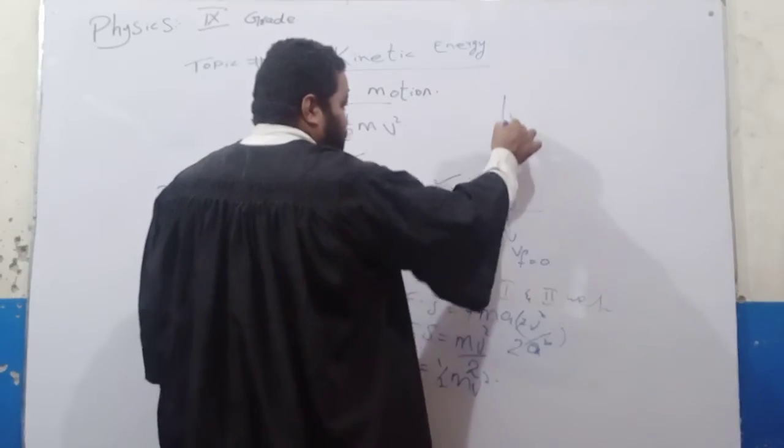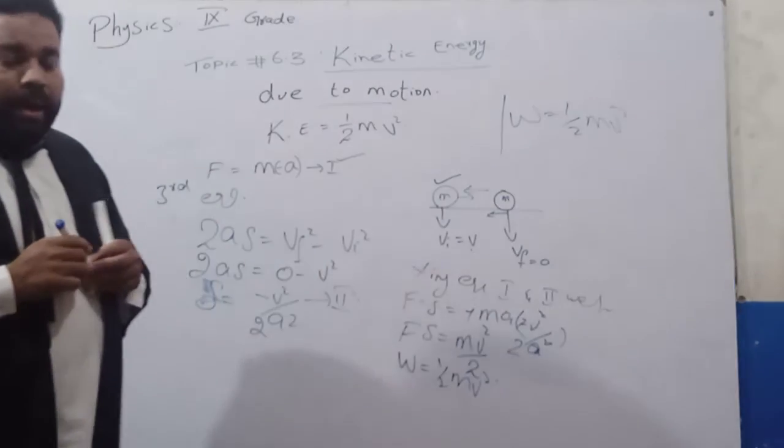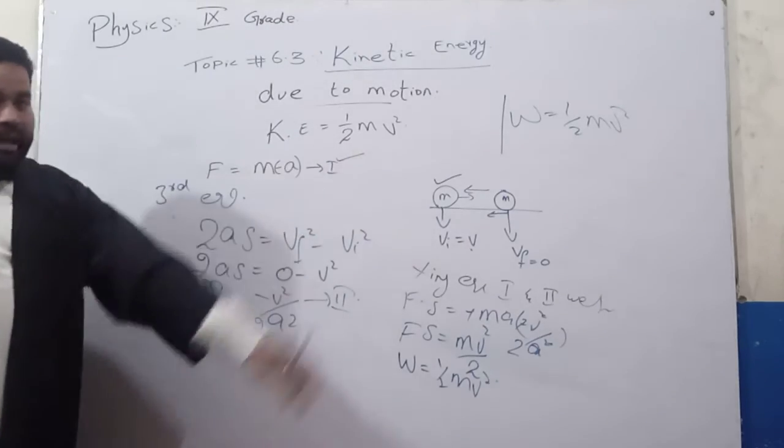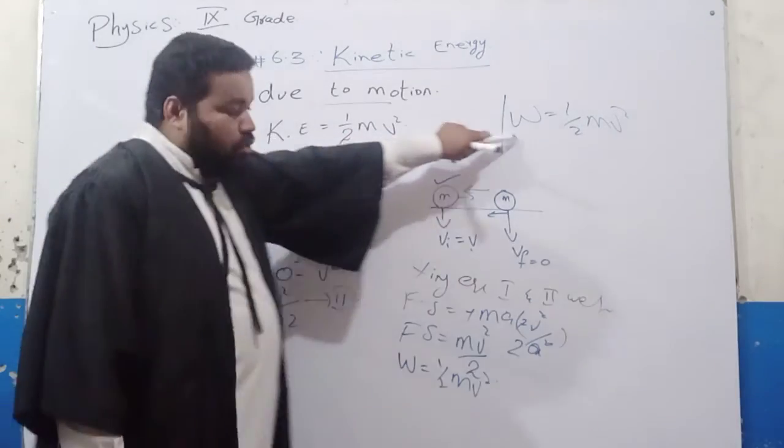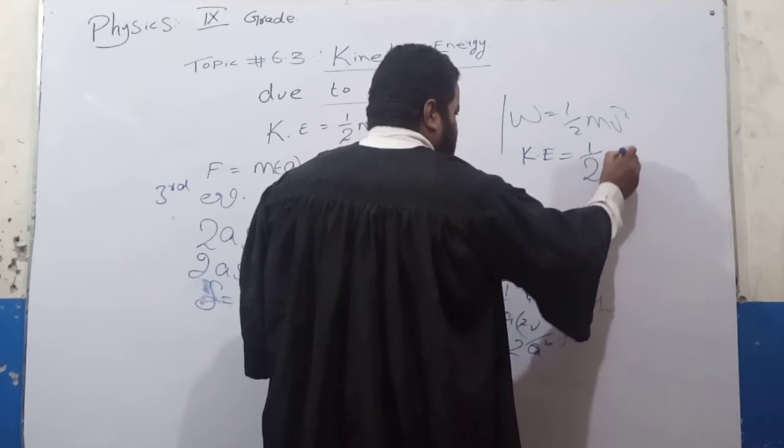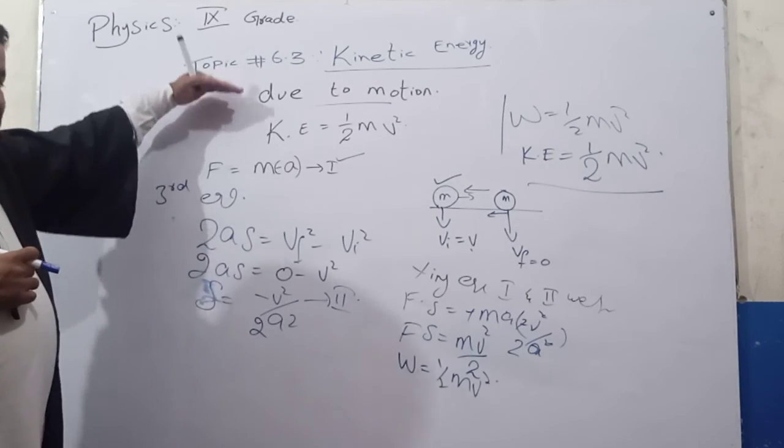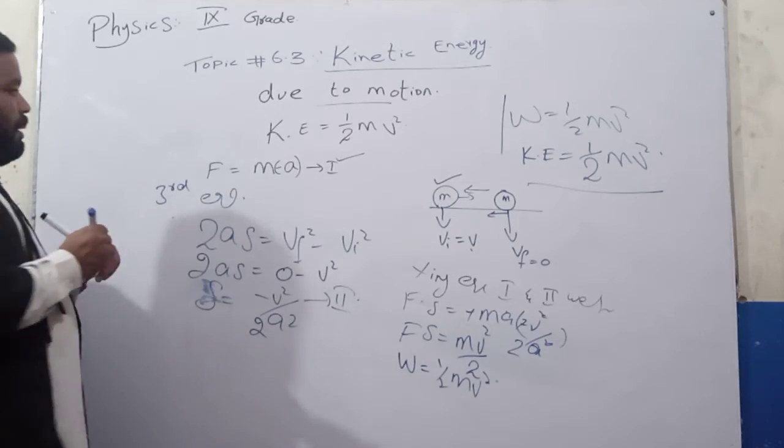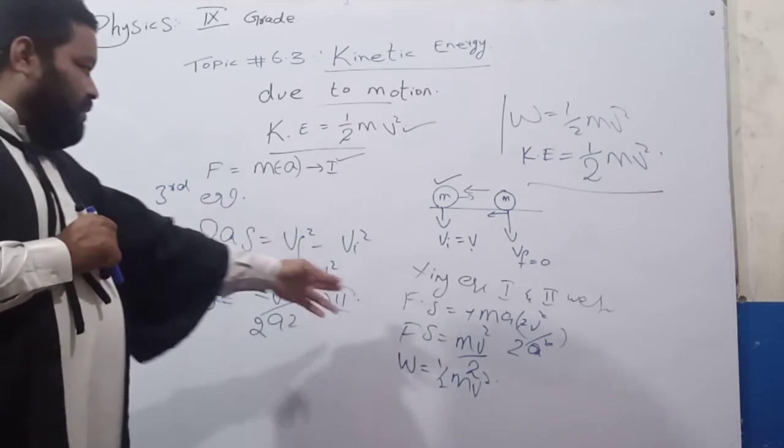Now what is Fs? This is work. So work equals 1 by 2 mv squared. This is the expression of kinetic energy and we will define it in the same way which is the relation 1 by 2 mv squared. We derived it.